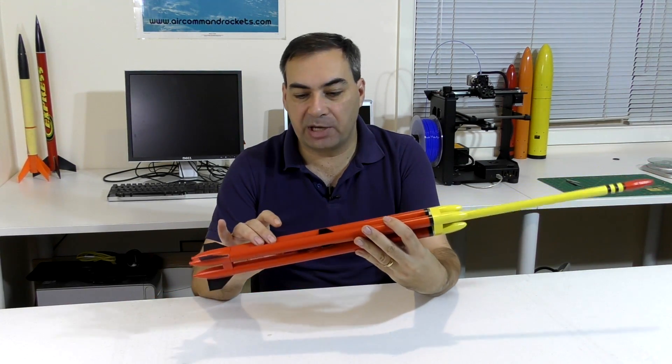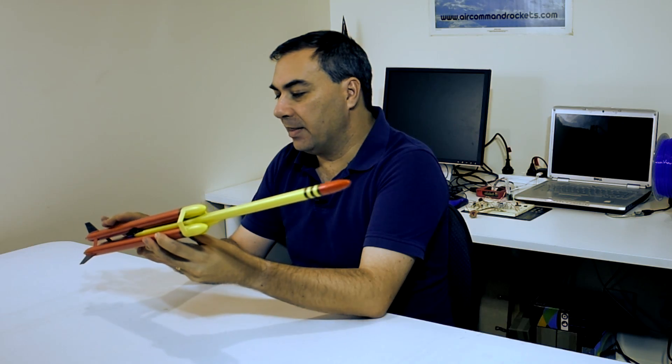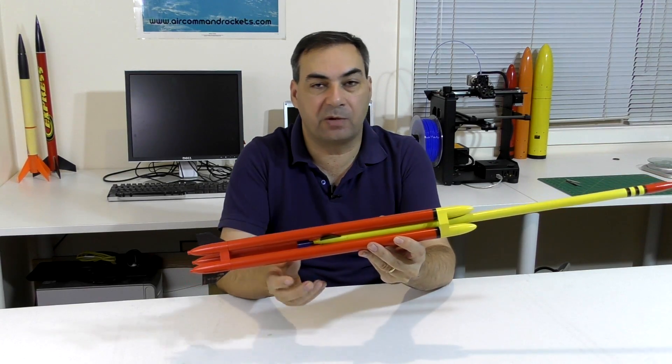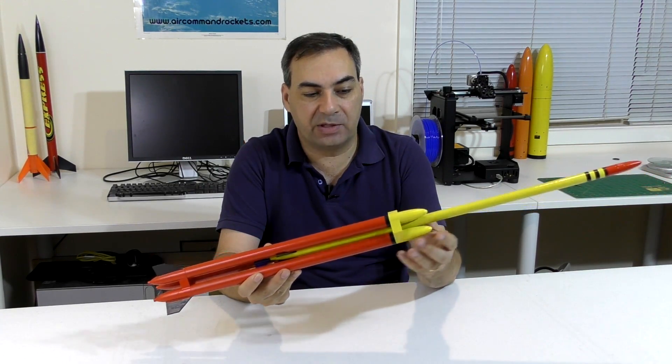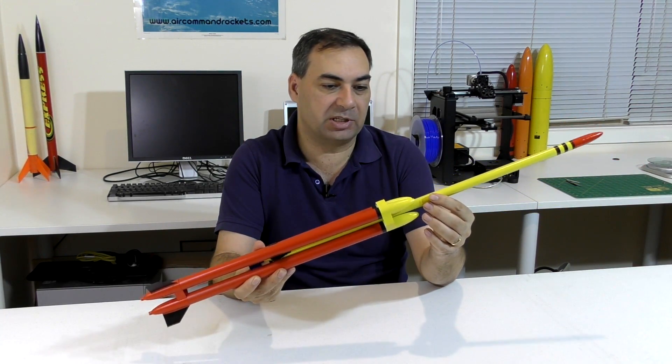The staging mechanism is located partway up the booster segments for a couple of reasons. One, to keep the weight forward so the rocket's more stable, and second, the boosters themselves provide some support for the sustainer.